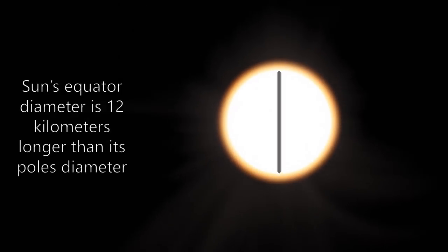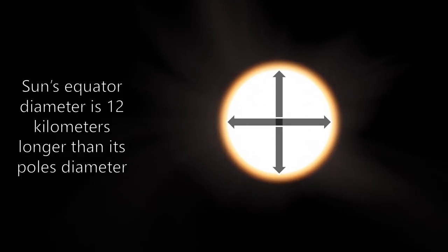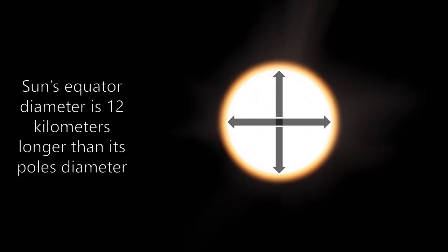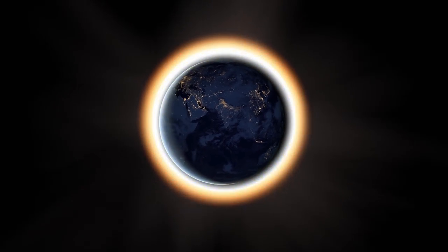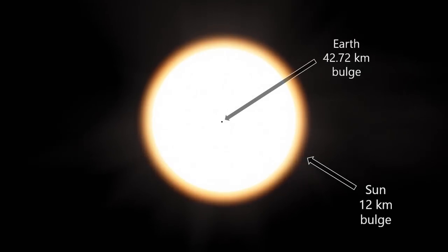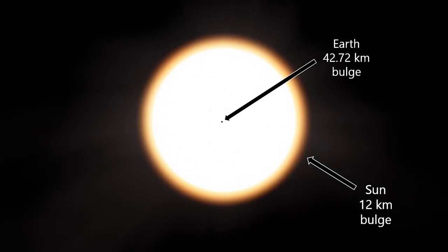But do you know what object has the least equatorial bulge in our solar system? Hint, it's not a planet. Hint, it has 99.8% to 99.9% the mass of our solar system. Hint, it's the sun. If you were to measure the diameter of the sun between two opposing points at the equator and two opposing points at the poles, you're going to find out that the difference is only 12 kilometers. It's not that much. Remember, the diameter of the sun is 109 times larger than Earth. And without making anything proportional, the equatorial bulge of the sun is less than that of the Earth.